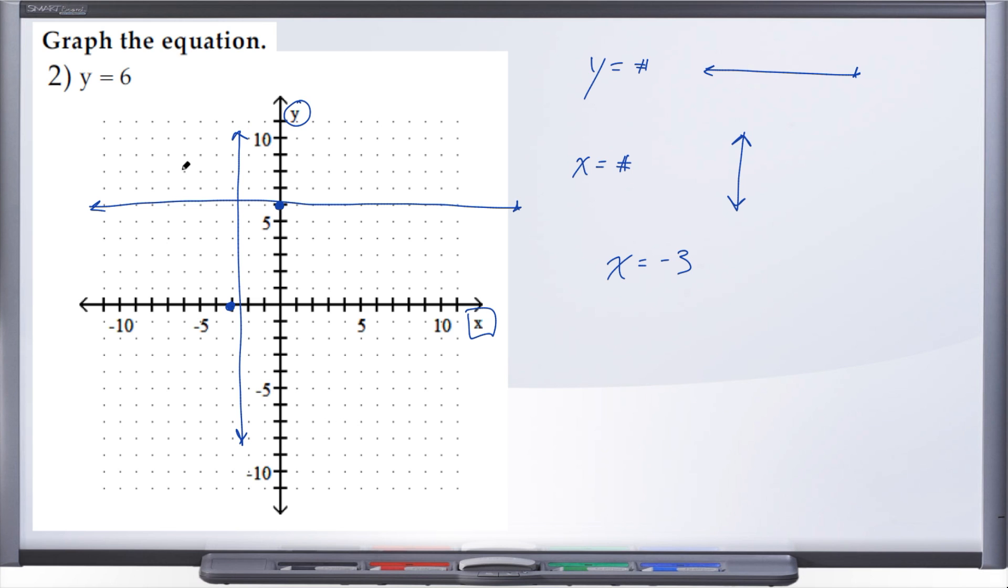Alright, so no work. You don't have to set up a t-table, you don't have to rearrange these equations into anything. As soon as you see an equation that just has a single variable, you know right away it's either going to be a horizontal line if it's y or a vertical line if it's x. Simply go to the number that you've been given on that respective axis.